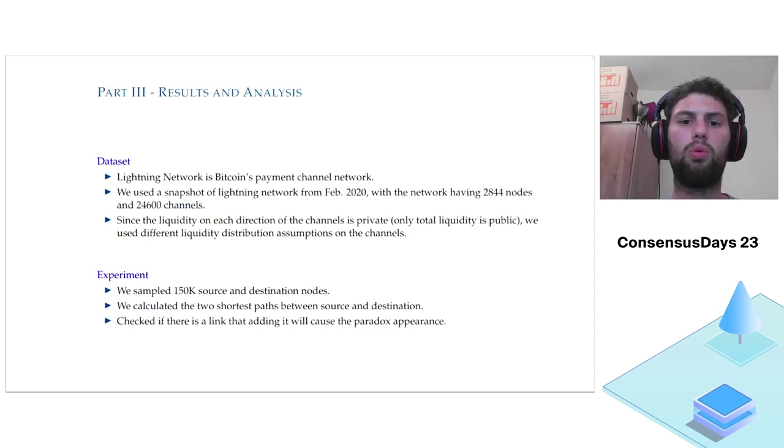We wanted to check if in payment channel networks the paradox is mainly theoretical, or if it's a real-life phenomenon that may occur and has effects on the network and causes a fee increase. We performed an analysis to check the possibility of the existence of the paradox in Lightning Network, which is, as I said, Bitcoin's main Layer 2 network. We looked at the snapshot of the network in 2020, when the network contained about 2,800 nodes and around 25,000 channels.